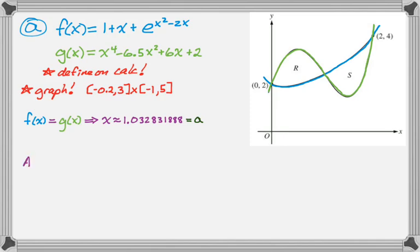So I need to do the total area. It's going to be the integral from 0 to a, and on this integral you can see g of x is above f of x, so top, take away bottom, like that, plus the integral from a to 2 of, on this interval, f of x is above g of x.